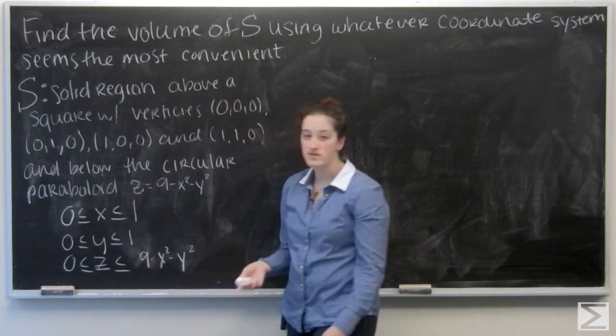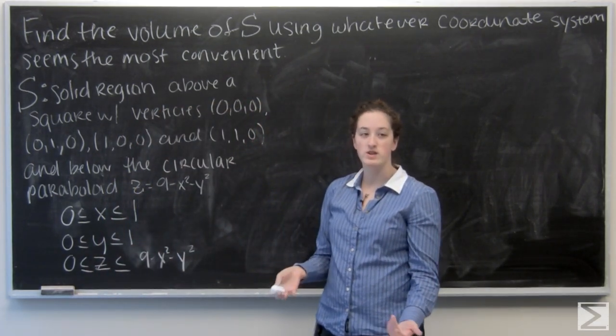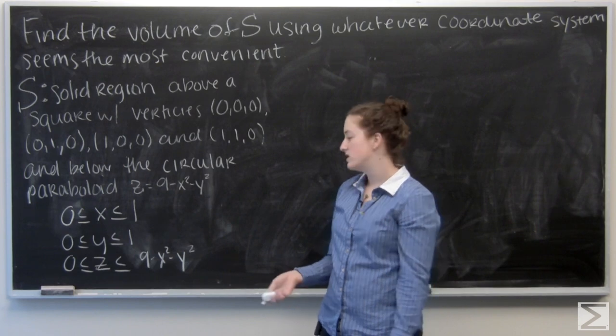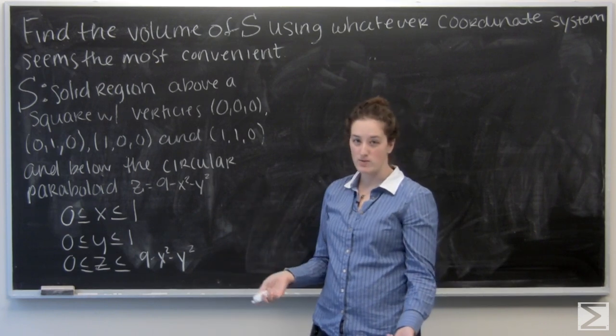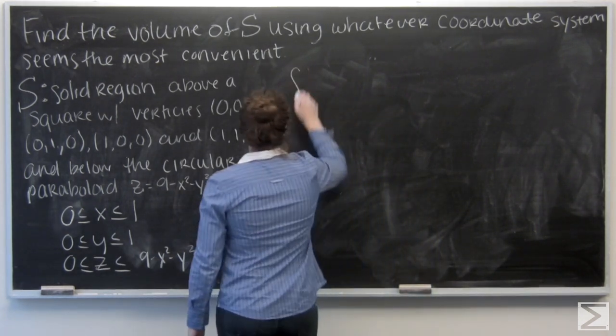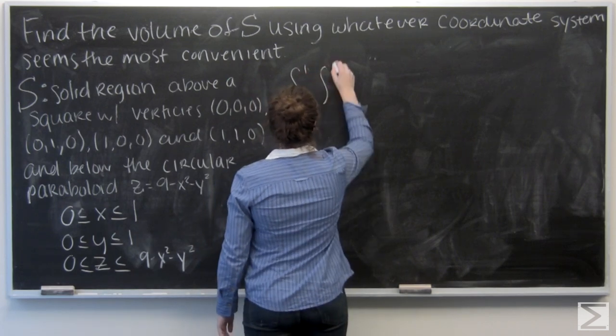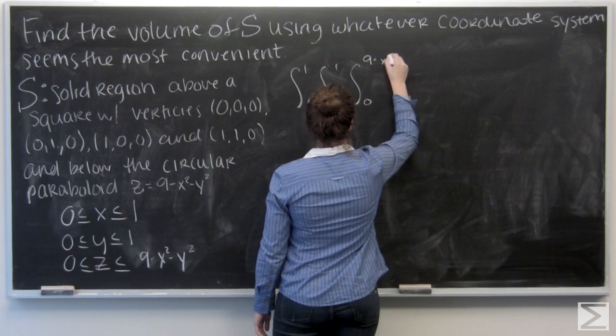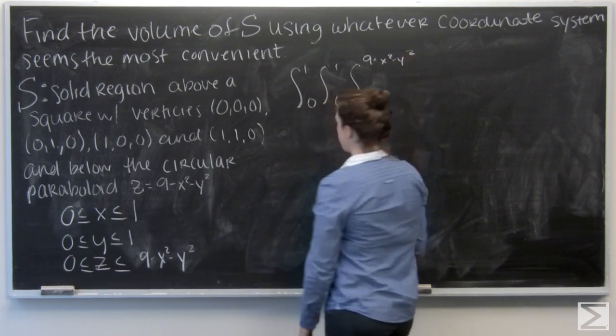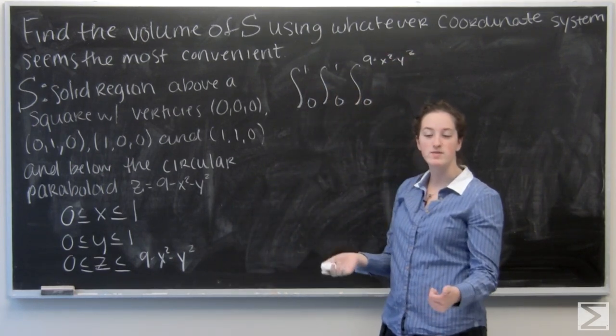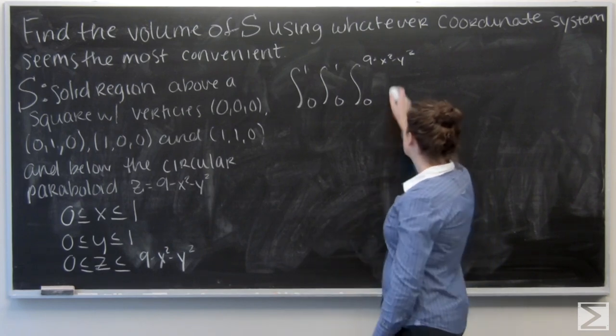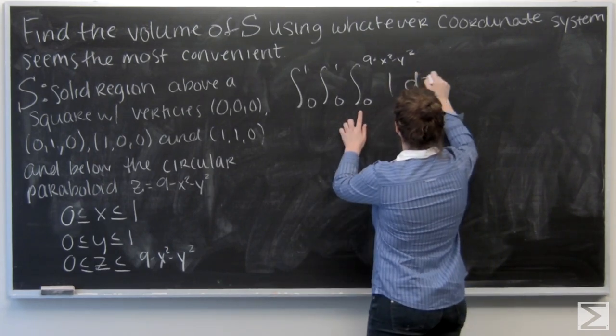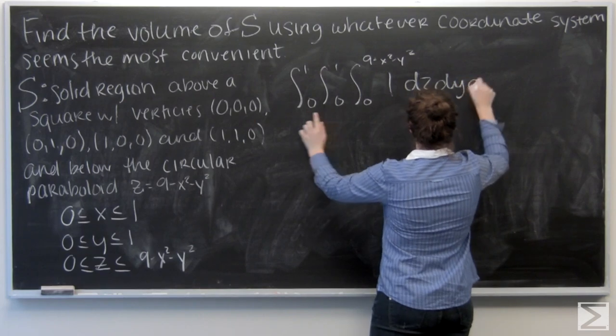If I look at my bounds, z is a function of x and y, so I definitely want to integrate with respect to z first. For x and y, it doesn't really matter what order I go in. Since I'm finding volume, I'm integrating the function 1, with dz, dy, and dx.